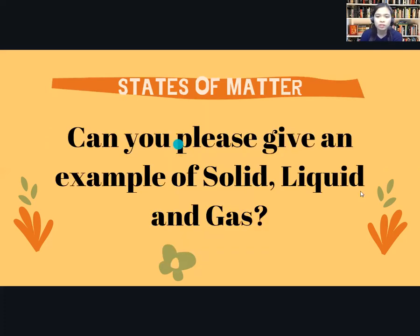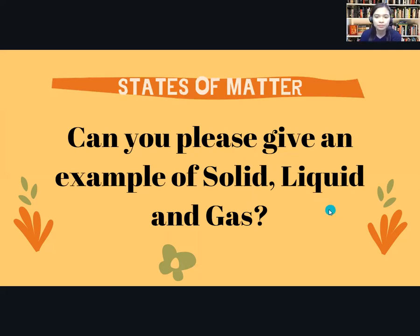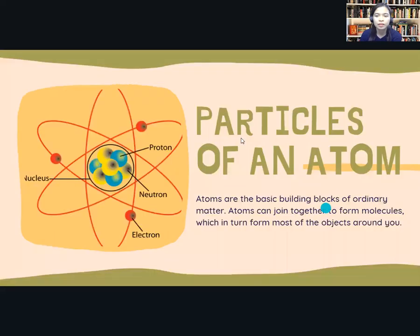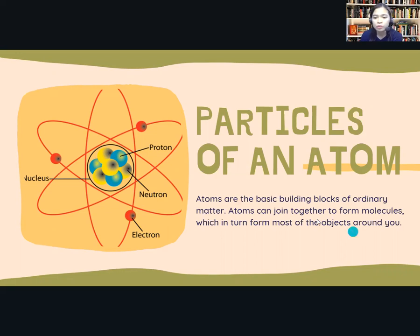Can you please give an example of solid, liquid, and gas? Kindly type it below and I'll check it later. Now, atoms are the basic building blocks of ordinary matter. Atoms can join together to form molecules, which in turn form most of the objects around us.